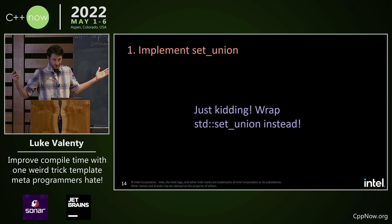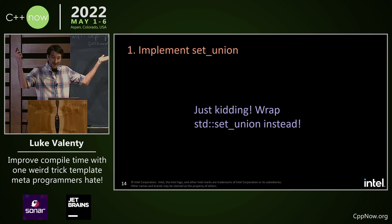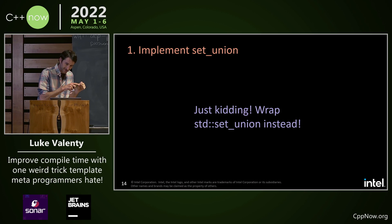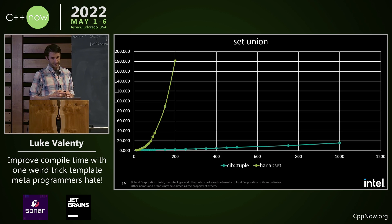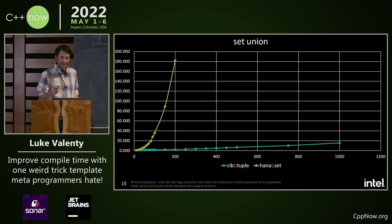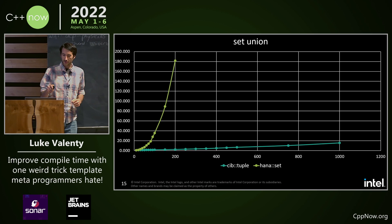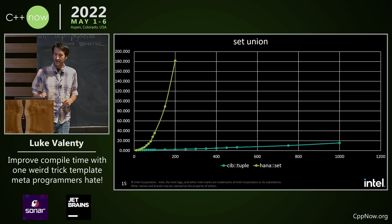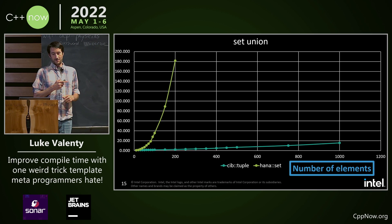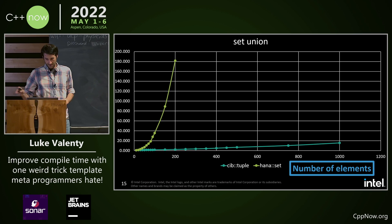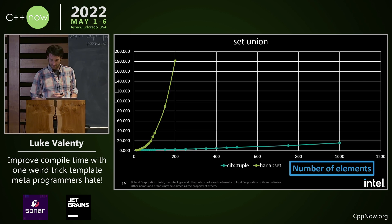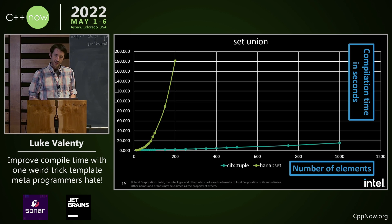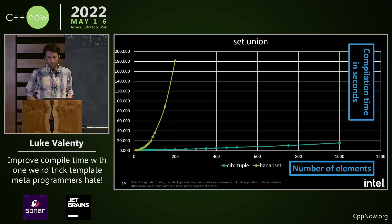How do we implement setUnion? I'll just wrap std::set_union instead. Here's a comparison with the CIB tuple doing union versus HANA set. On the bottom, we have the number of elements going up to a thousand for one of them.